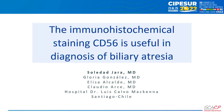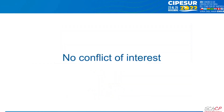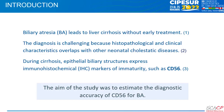The immunohistochemical staining CD56 is useful in the diagnosis of biliary atresia. We have no conflict of interest. Biliary atresia leads to liver cirrhosis without early treatment.